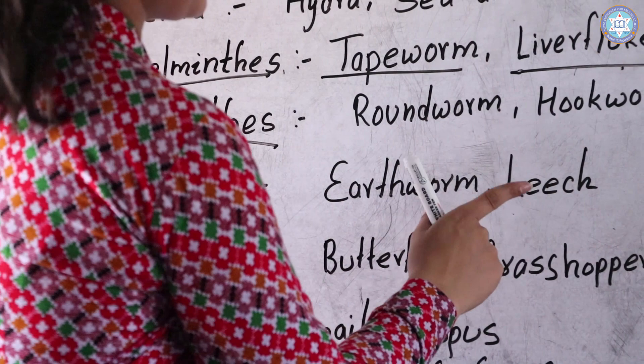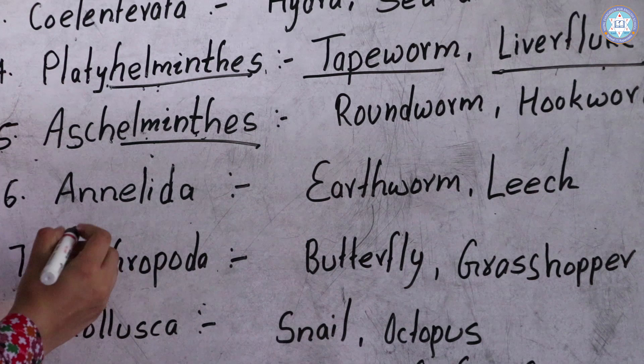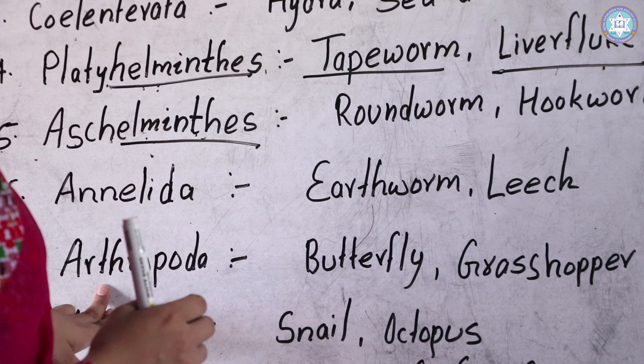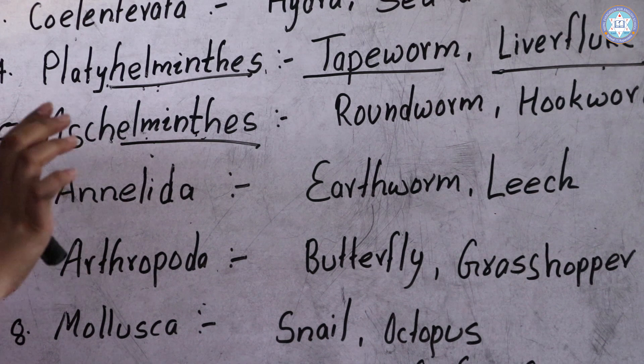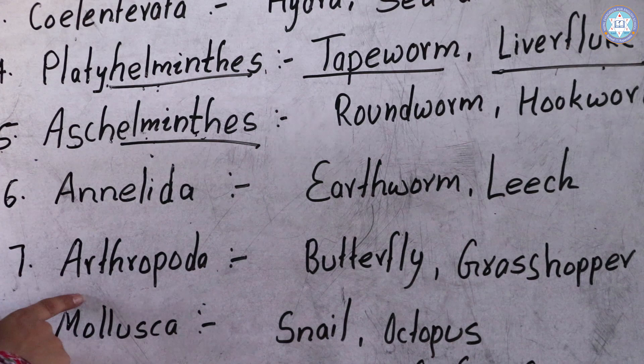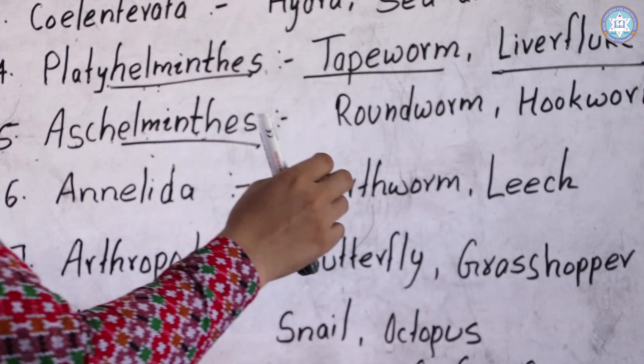The next phylum is Arthropoda, and all insects belong to this phylum. All the insects around us are part of Arthropoda. Examples are Butterfly and Grasshopper, or any insect. All animals which have jointed legs are Arthropods.